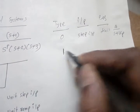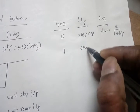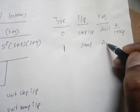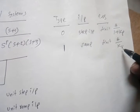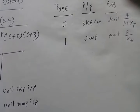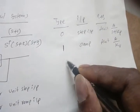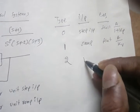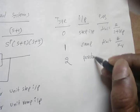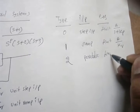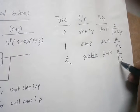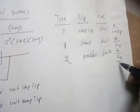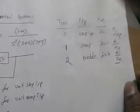If type is 1 under ramp input, the steady state error is finite, which is A by Kv. Kv is velocity error constant. Similarly type 2 and the input should be parabolic, and this is finite which is A by Ka. So this is velocity and this is acceleration error coefficient.